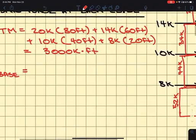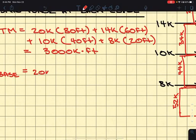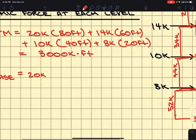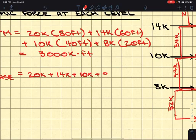So we got 20 kips plus 14 kips plus 10 kips plus 8 kips, and that's going to be equal to 52 kips. So we got our base shear at 52 kips.